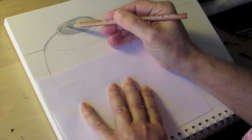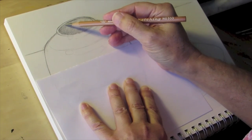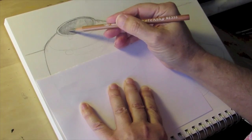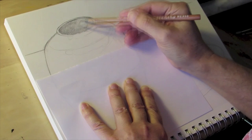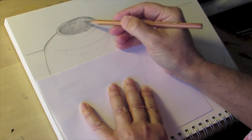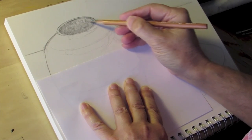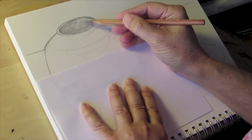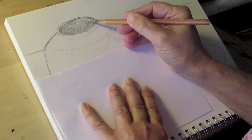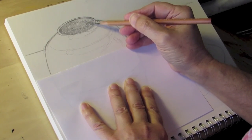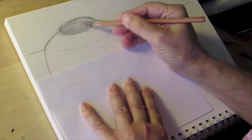Remember that we're working from the tone of the paper, which in this case is white paper, toward our darkest darks. We want to reserve the darkest darks for the very end of the drawing process when our observations are most accurate and we're most likely to put those into the right place.